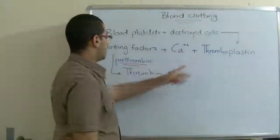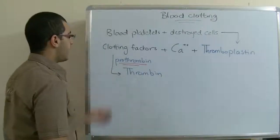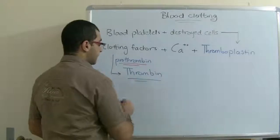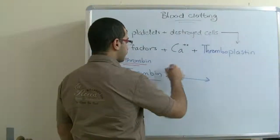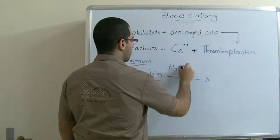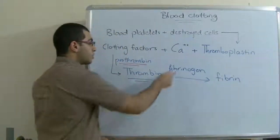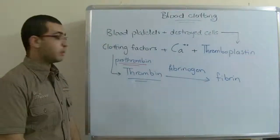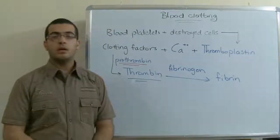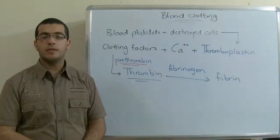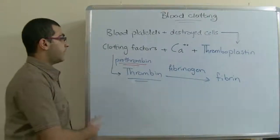The Thromboplastin activates the Prothrombin into Thrombin, converting the inactive Prothrombin into active Thrombin. As Thrombin is an active enzyme, it activates the conversion of fibrinogen into fibrin. The fibrinogen is an insoluble protein substance found in the blood. The fibrin makes microscopic interlacing fibers inside the blood vessels which prevent the blood clotting and close the pathway of the blood outside the blood vessel.